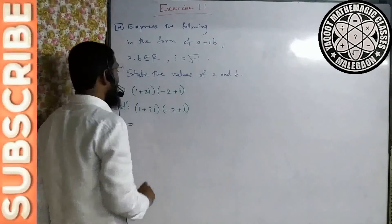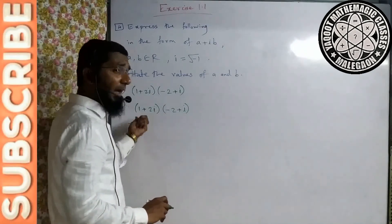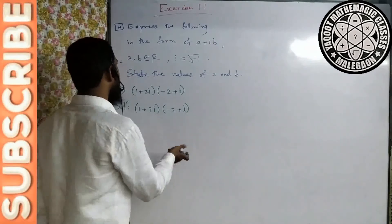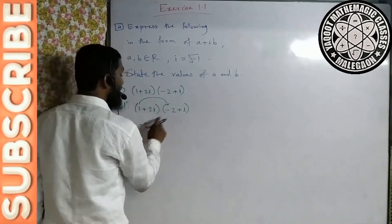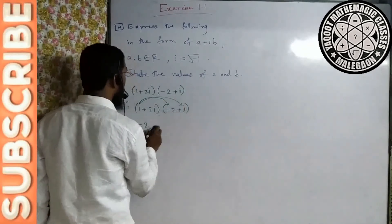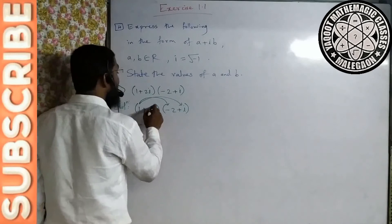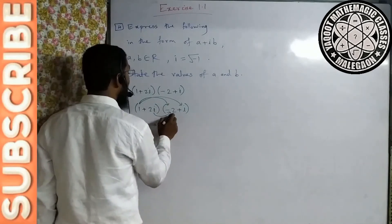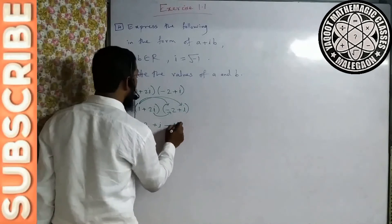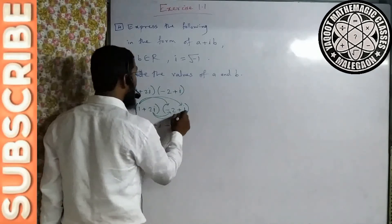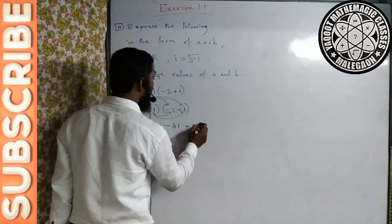Hum iska multiply binomial ka binomial se jis tarike se karte hain usi tarike se karenge. 1 into (−2) = −2. 1 into i = i. 2i into (−2) = −4i. 2i into i = 2i².